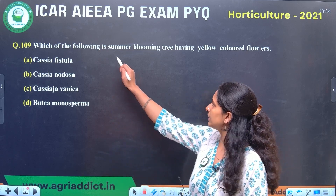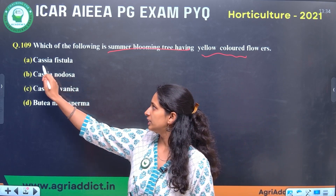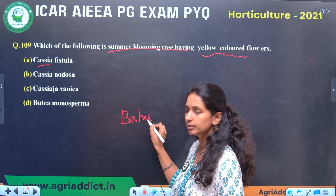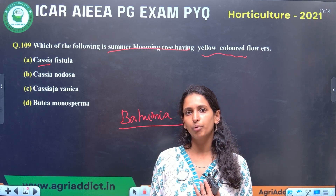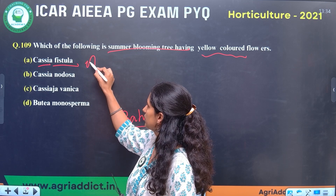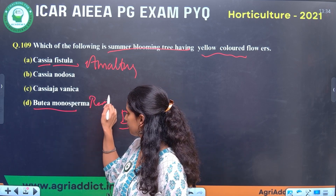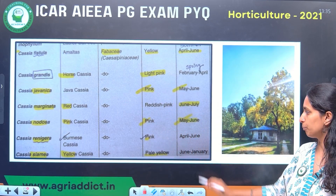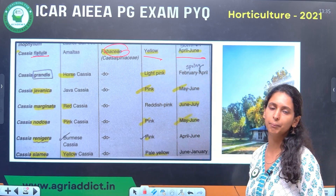Next question: which of the following is the summer blooming tree having yellow flowers? Similar questions were asked in 2022 — they give different species of the same genus, like Cassia or Bauhinia. For example, Bauhinia alba is white and Bauhinia purpurea is purple. In Cassia, Cassia fistula — the Amaltas — is very famous with yellow colour, belonging to the Fabaceae family, blooming during April to June. Cassia grandis, called Pink Cassia or Hot Cassia, blooms during spring up to April with light pink flowers.